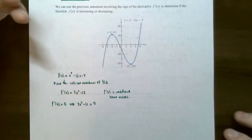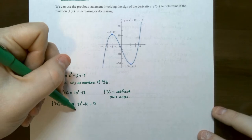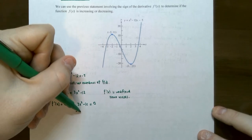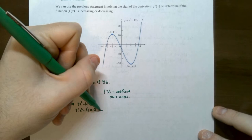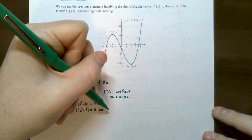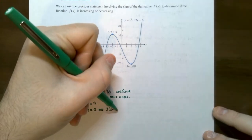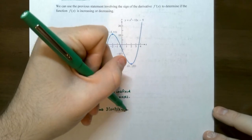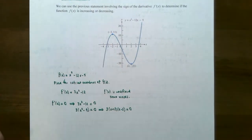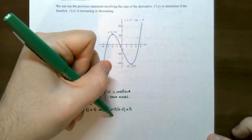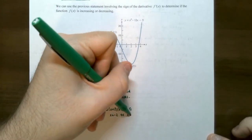Setting 3x squared subtract 12 equals zero, you can solve this several ways since it is a quadratic equation. I typically like to factor — factor out the GCF of 3, then notice it's a difference of squares: x plus 2 times x minus 2 equals zero. So we get two critical numbers: x equals negative 2 and x equals positive 2.